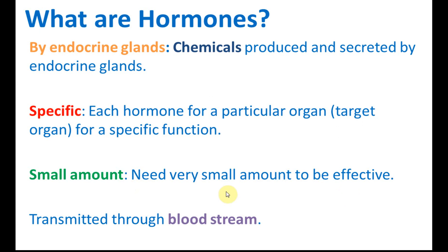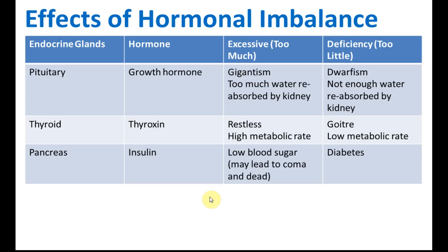We only need a small amount of hormones for them to be effective - just very little can give effects to the body. Unlike impulses which are transmitted through neurons, hormones are transmitted through the bloodstream. So the key things to know: hormones are chemicals produced and secreted by endocrine glands, they are specific (one hormone, one use), a small amount is sufficient, and they are transmitted through the bloodstream.